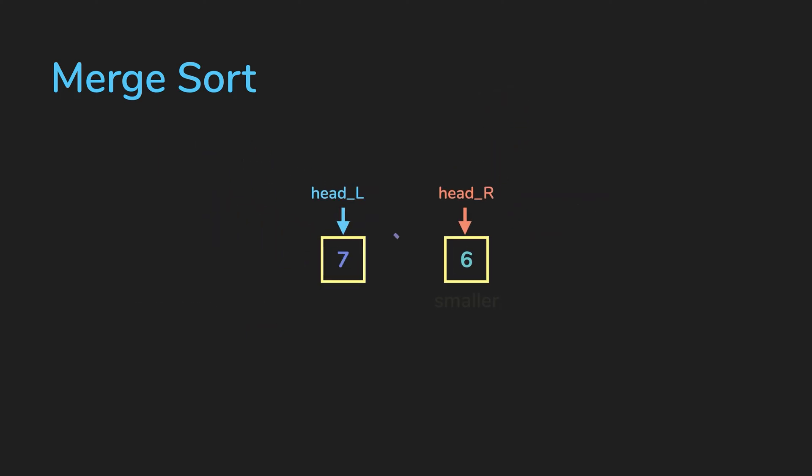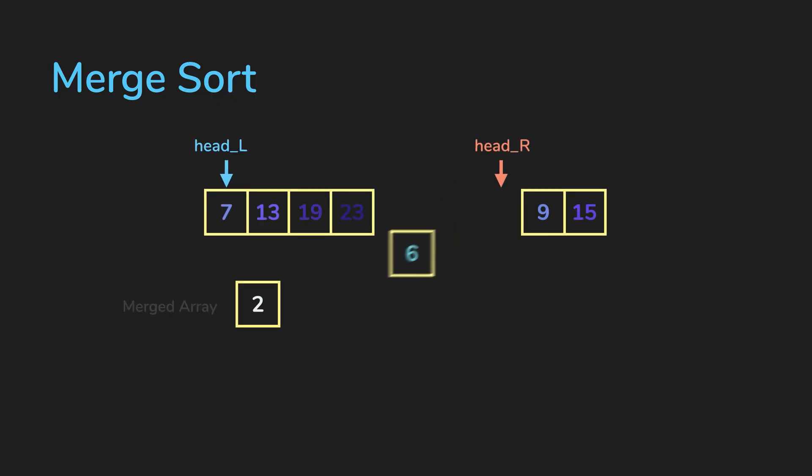We compare L and R. R is still smaller this time, so we put the 6 into our merged array, and we increment our head pointer of R.